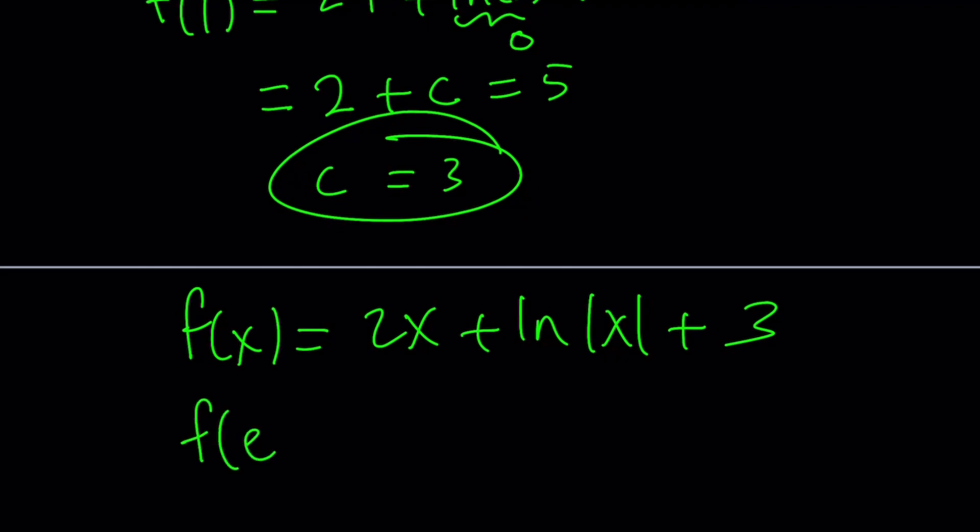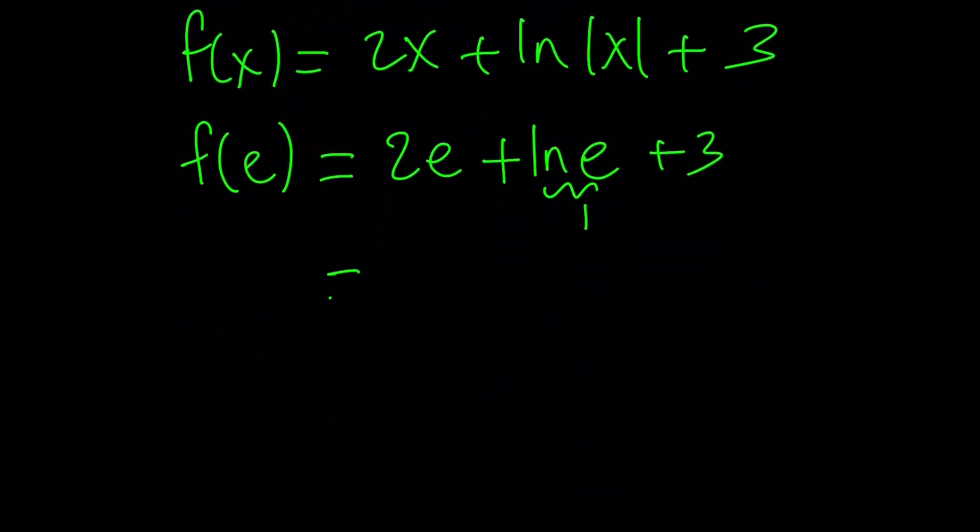And we're supposed to find f of e. Replace x with e. 2e or not 2e. That just didn't work. Plus ln e plus 3. ln e is equal to 1 because it's the natural log base. And we get 2e plus 4 as the answer.